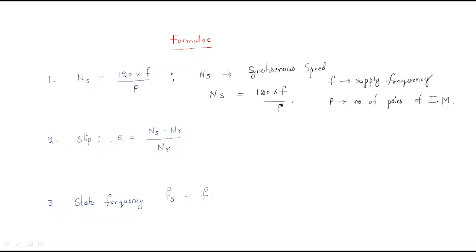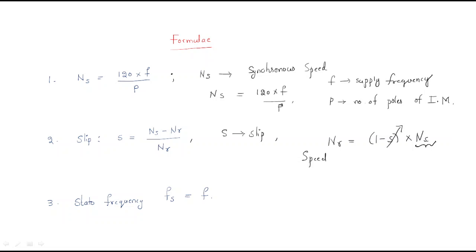Next is the slip. Slip is the phenomenon that gives the ratio of the difference between the synchronous speed and the rotor speed, to the synchronous speed. Slip is a very useful term — it is useful to find out the speed. The rotor speed of an induction motor depends on the slip as well as the synchronous speed. We can find out the synchronous speed using the frequency and the number of poles.